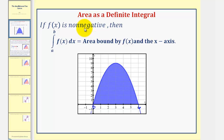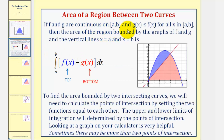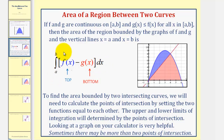To find the area bounded by two curves, we extend this idea. If f of x and g of x are continuous on the closed interval from a to b, and g of x is less than or equal to f of x for all x in the interval, then the area of the region bounded by the two graphs and the vertical lines x equals a and x equals b is given by the definite integral of f of x minus g of x with respect to x from a to b. One of the most important things to recognize is that f of x must be the top function and g of x must be the bottom function.